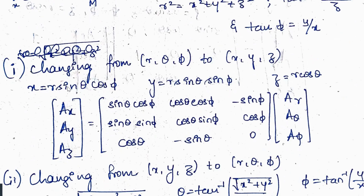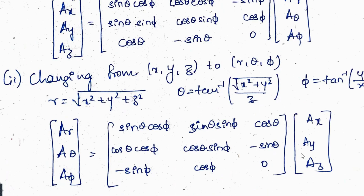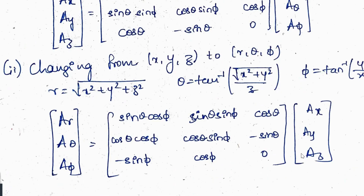To convert spherical to Cartesian, use the transformation matrix with elements: [sinθ·cosφ, cosθ·cosφ, −sinφ; sinθ·sinφ, cosθ·sinφ, cosφ; cosθ, −sinθ, 0], multiplied by the spherical constants Ar, Aθ, Aφ to get the Cartesian form. For the reverse — Cartesian to spherical — find r = √(x²+y²+z²), θ = tan⁻¹(√(x²+y²)/z), φ = tan⁻¹(y/x), then solve the matrix.